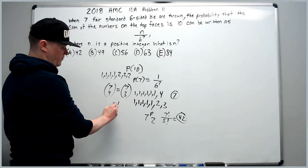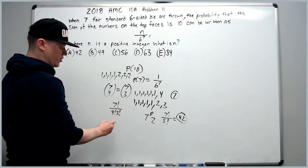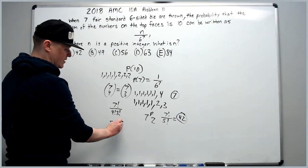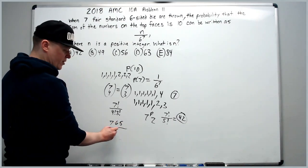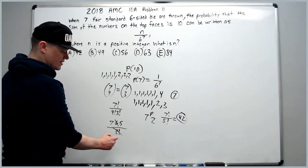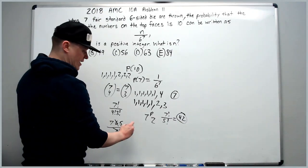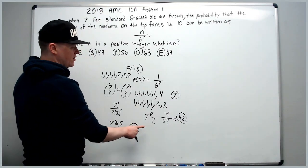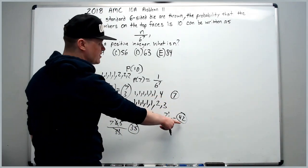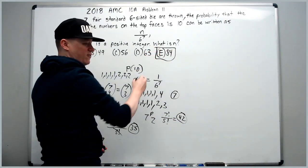You'll get 7 factorial over 4 factorial 3 factorial. That will be 7 times 6 times 5 over 3 factorial, which cancels the 6. So 7 times 5 is 35. 35 and 7 is 42, doubled is 84.